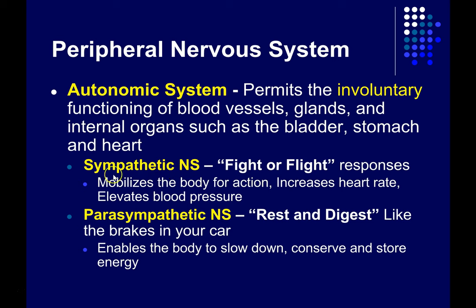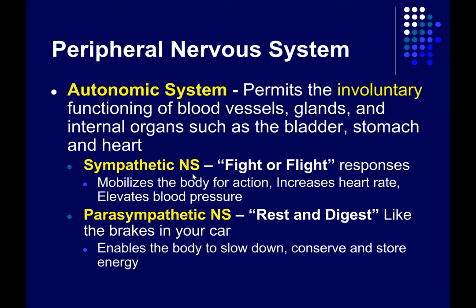The sympathetic branch of the autonomic nervous system functions as fight or flight — it prepares and mobilizes the body's resources for action. For example, it increases heart rate, elevates blood pressure, and releases adrenaline into your bloodstream. Although it may be tempting to think of this as overall activation, there are things the sympathetic nervous system deactivates — for example, digestion. You don't need to be digesting your peas and carrots while you're running away from a bear; you want those resources devoted to your muscles.